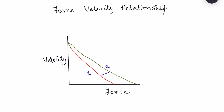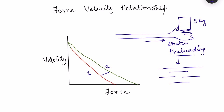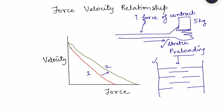When preload increases, there is a shift in the graph. Suppose I have to lift a load of 5 kg kept on my hand — when some load is kept on my hand, my muscle will stretch a little bit. This is known as preloading: stretch of the muscle length occurs, and because of this there is optimum overlap of actin and myosin in the sarcomere. This is the Frank-Starling law — when muscle length increases, there is an increase in the force of contraction.